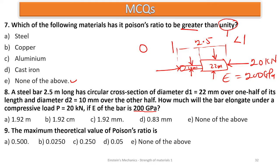Number nineteen: the ratio of linear strain to lateral strain is called — pay attention here: Poisson's ratio is lateral strain divided by linear strain. If you reverse it, it is not Poisson's ratio, so the answer is none of the above.